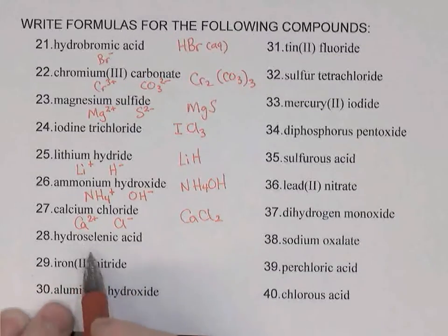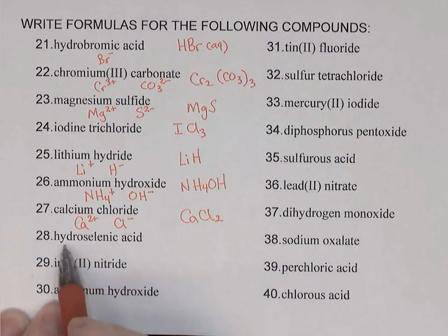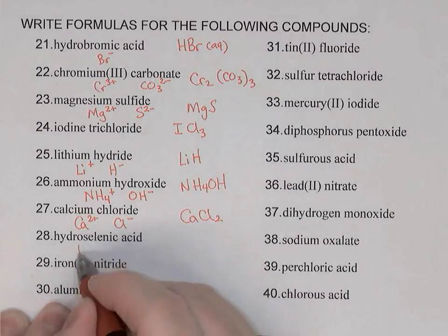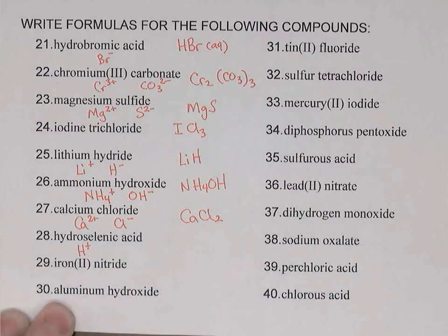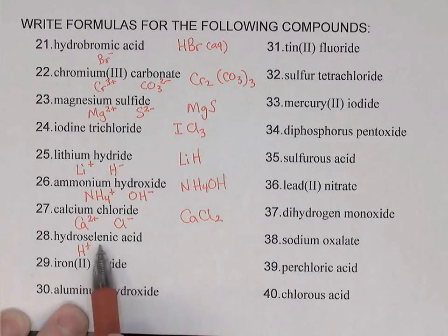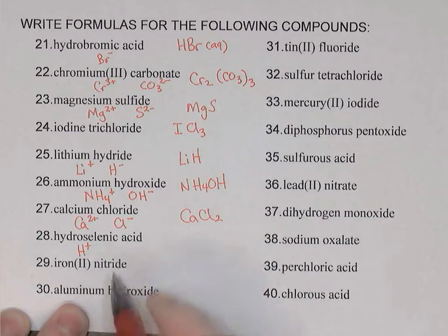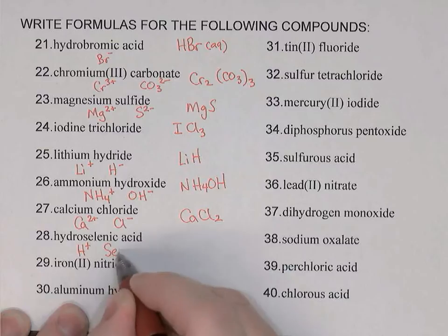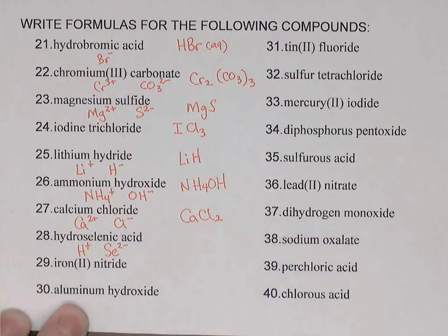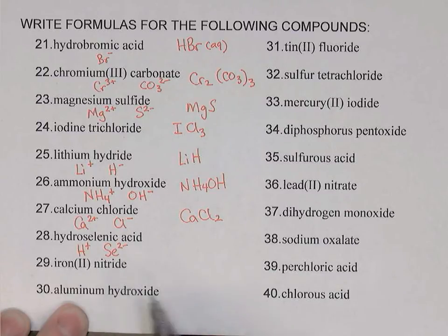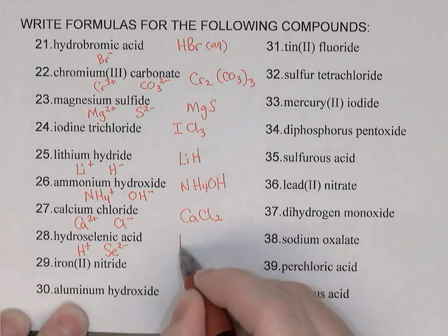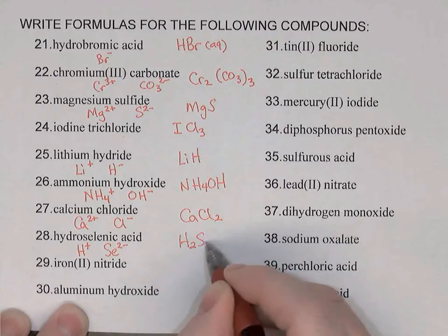Hydroselenic acid: clearly it's an acid, and with hydro at the beginning it must be a binary acid — hydrogen ion bonded to one other element, in this case selenium. Selenium is in the same family as oxygen, so its charge must be 2-. Since hydrogen is +1, we need two hydrogens to bond to that selenium: H2Se.